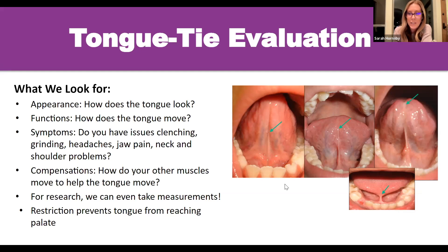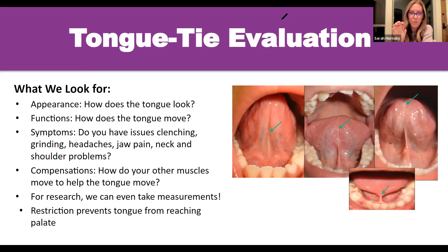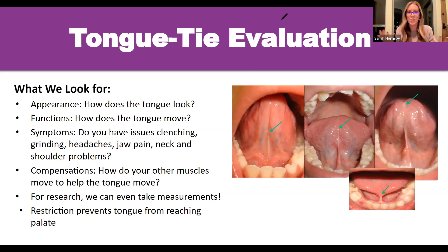We're looking at compensations, which is a very important key topic. We've got five compensations defined in the literature: floor of mouth elevation, jaw protrusion, jaw lateralization, facial grimace, and neck engagement. So there are really five functional evaluations we're doing for compensations, and our next area of research is to actually publish on the measurements for all of these. They have to be objective and measurable — we can't just talk about them, we have to have a way of defining and measuring them.